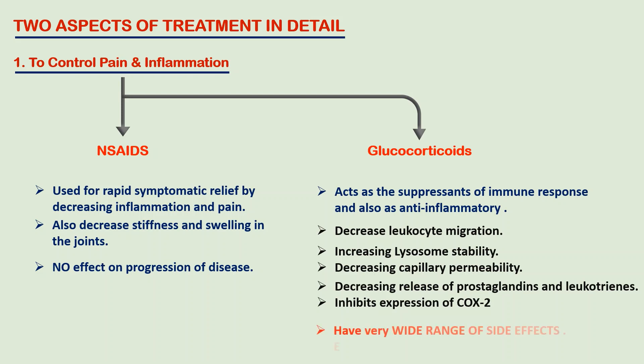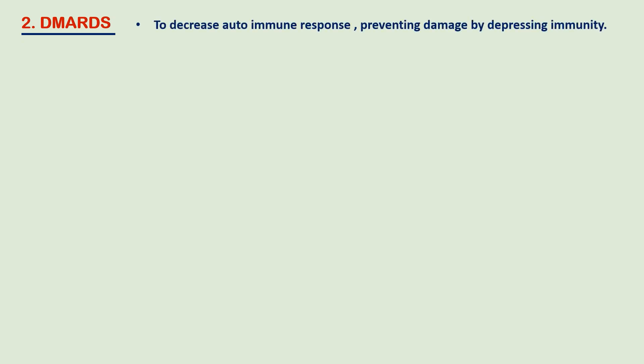Glucocorticoids have a wide range of side effects including candidiasis. Regarding the second aspect of treatment — DMARDs — these drugs are mainly used to decrease the autoimmune response and further prevent tissue damage by suppressing the immune system.